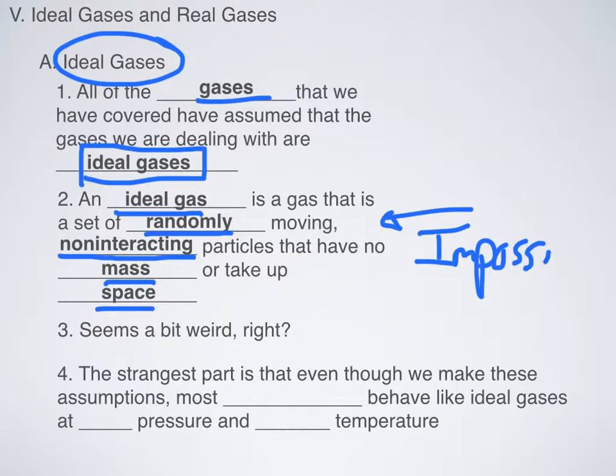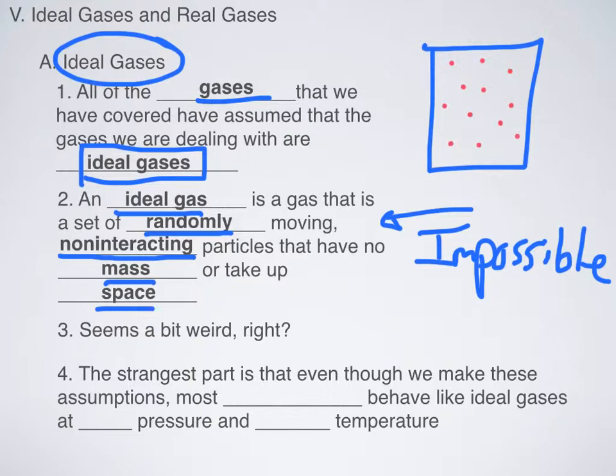Okay, but it gives us sort of a model that we can use to describe how gases behave. So here's the thing, if I had a gas, gases are randomly moving, and relatively speaking, non-interacting particles, meaning that they just kind of bounce off of each other and bounce off of walls and stuff.